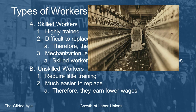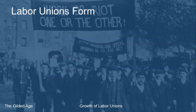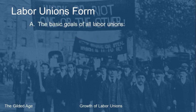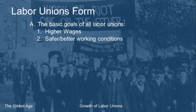Another thing going on during the Gilded Age is skilled workers being replaced by unskilled workers, which causes friction between the two groups. As businesses started taking advantage of workers, labor unions began to form. The basic goals of labor unions were higher wages, safer and better working conditions, and fewer hours — these are the main basics.